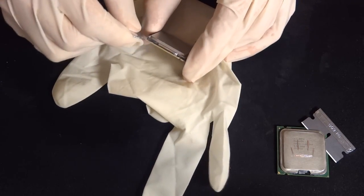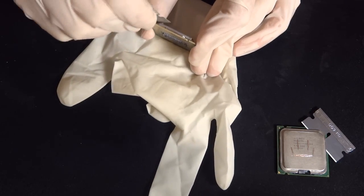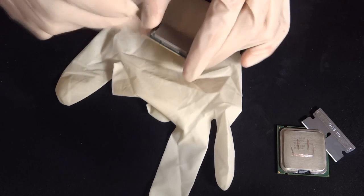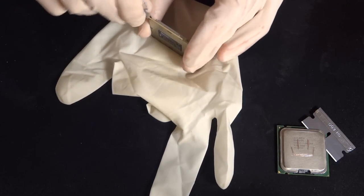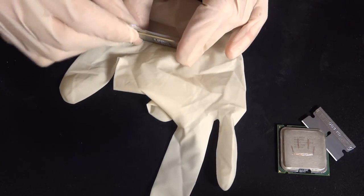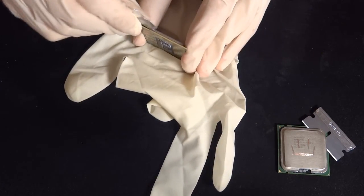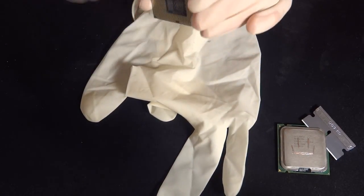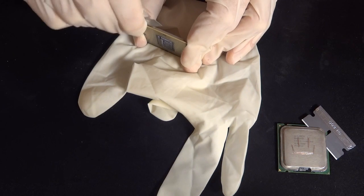To start off with delidding, obviously you clean off the TIM. Make sure it's absolutely clean. You don't need to use any alcohol as of yet. Just use as I did, like a little towel or a kitchen roll tissue.